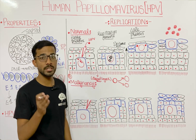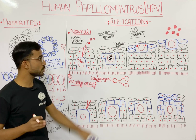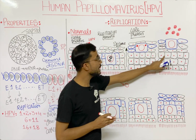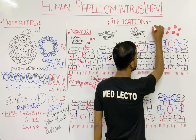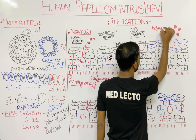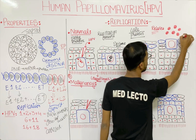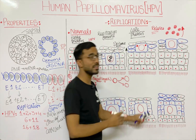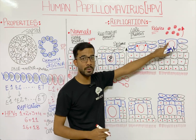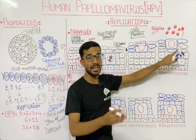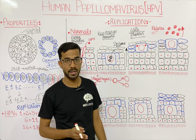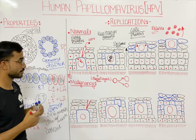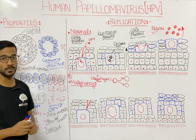Two components have now been produced: the genomic material and the capsid. These are assembled into complete virus particles that are released into the environment from the superficial surface. These released viruses can infect other people as well. This is the normal replication pathway.